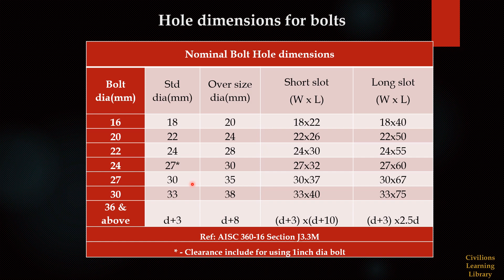Sometimes we use oversize holes in the structure. The oversize hole dimensions are listed here. For a 16mm diameter bolt, the oversize hole dimension is 20mm. For 20mm bolt, it is 24mm. For 22mm diameter bolt, the oversize hole dimension is 28mm. For 36mm and above, the dimension is D plus 8mm. So these are the values for oversize holes.